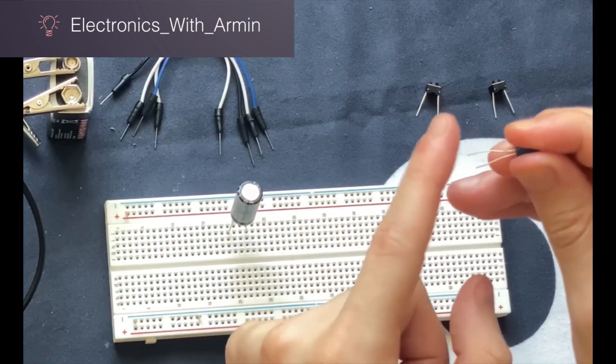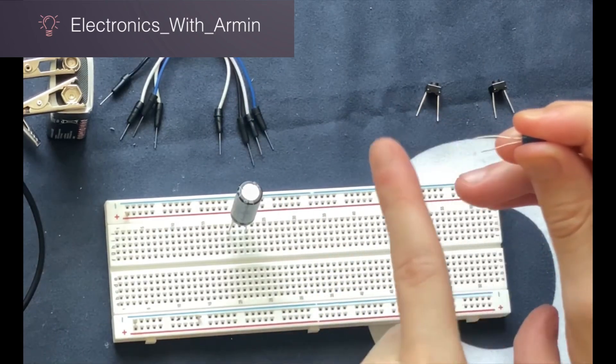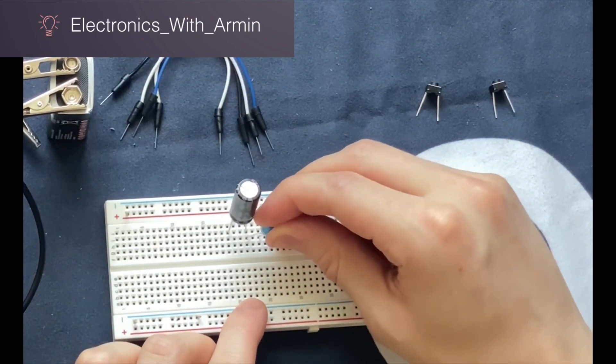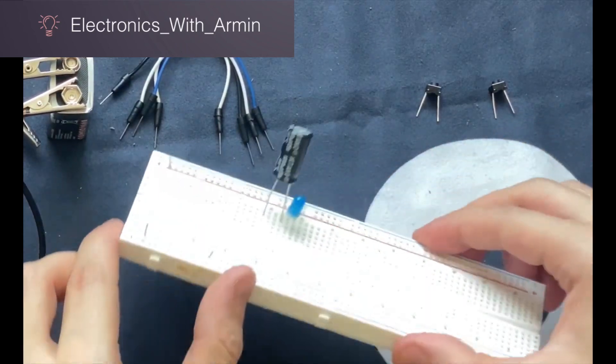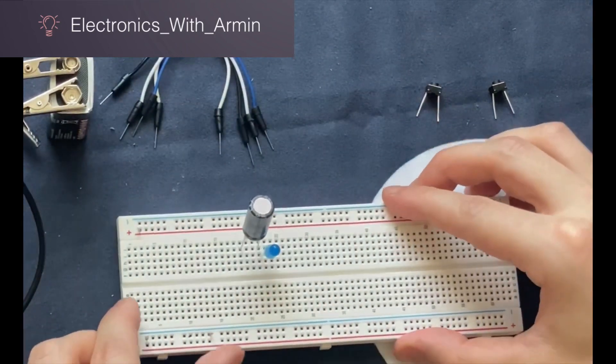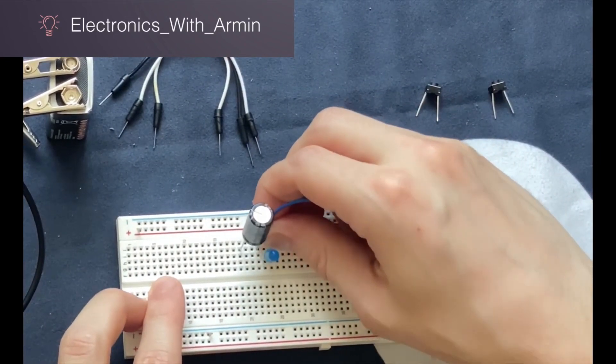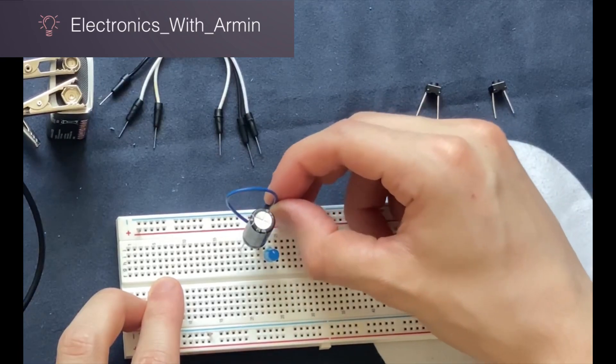I also connect the anode of the LED, which is the positive longer lead, to the anode of the capacitor. And I connect both these elements to the positive rail of the breadboard.